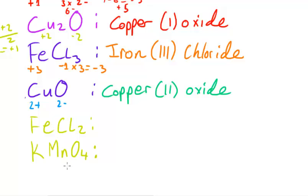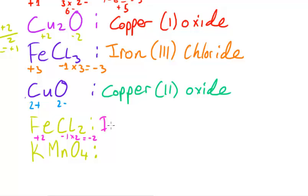For the next iron chloride compound, chlorine has an oxidation number of minus one per atom, and with two chlorine atoms that's minus one times two, giving minus two. To balance that out, the iron needs a charge of plus two, so the systematic name is iron(II) chloride.